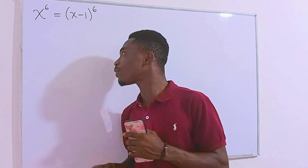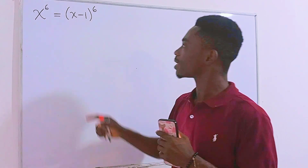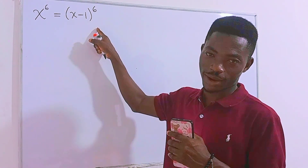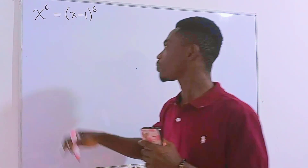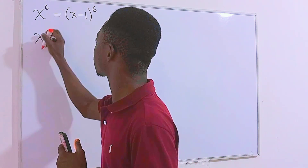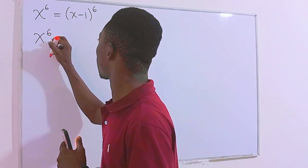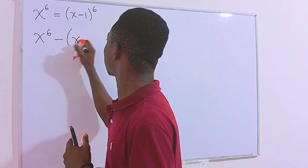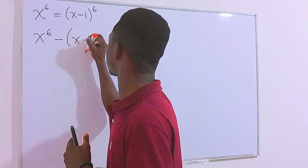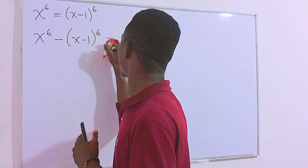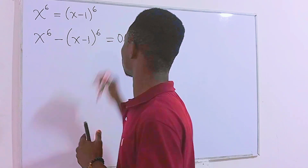The very first thing I'm going to do is transpose everything so that we'll have x to the 6th power minus everything on the right, which is x minus 1, all to the 6th power, and this is equal to 0.